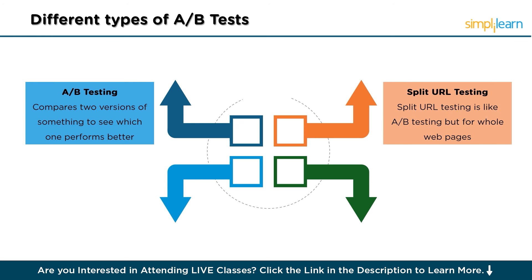Next is split URL testing. Split URL testing is like A-B testing but for whole web pages. Instead of changing just one thing on a page, you create two separate web pages with their own URLs. For example, if you're testing a new layout for your blog, you'd have one version at the original URL and another version on a new URL, then see which page layout gets more visits or keeps visitors engaged longer.